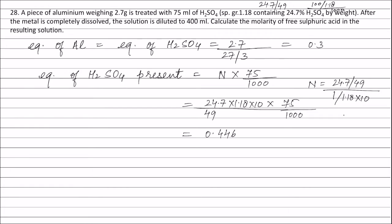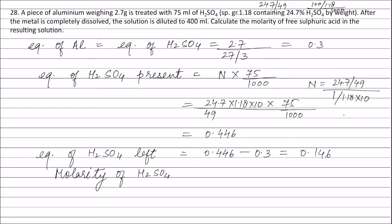Out of the 0.446 equivalents of sulphuric acid present, 0.3 equivalents reacted with aluminium. Therefore, equivalents of sulphuric acid left = 0.446 − 0.3 = 0.146 equivalents. Molarity of sulphuric acid = normality divided by valency factor (2), where normality = equivalents of sulphuric acid left (0.146) divided by volume of solution.